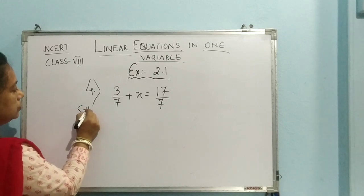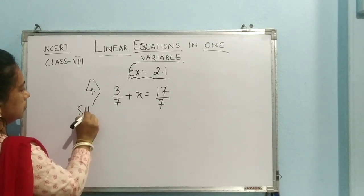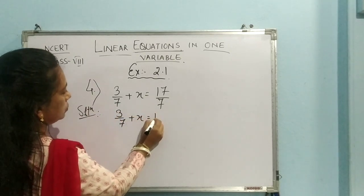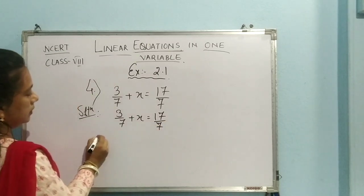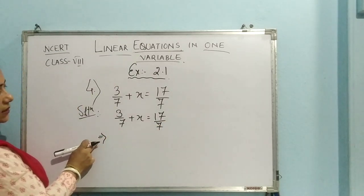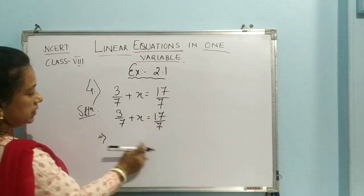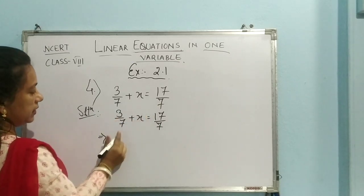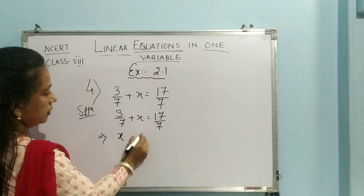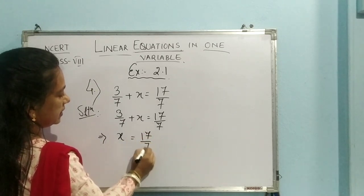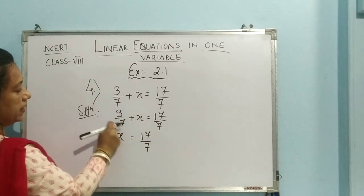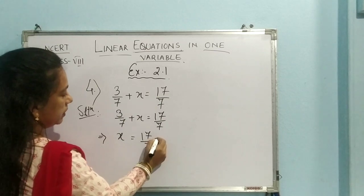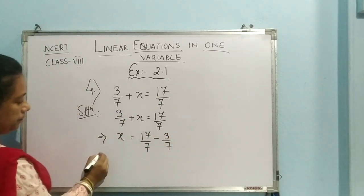So again, let us start the solution. 3 by 7 plus x equal to 17 by 7. See, here I am putting implies sign because in the same line we cannot have 2 equal to signs. That is why the first one will be implies and the second one will be equal to sign. So here we are having x as our variable. So I will be keeping x here equal to 17 by 7. So I am shifting this entire term, 3 by 7. So before that, what is the sign? No sign is plus sign. So if it moves to the other side, it will become minus 3 by 7.